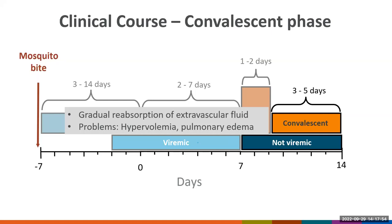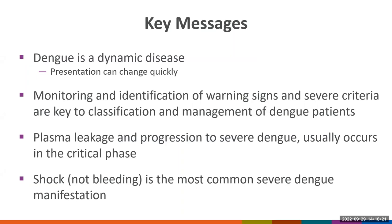The last phase of dengue is the convalescent phase, which lasts about 3 to 5 days. The extravascular fluid is reabsorbed in a gradual manner, and the clinical problems in this phase include hypervolemia and pulmonary edema, many times caused by excessive IV fluids administered during the previous phases. The critical phase usually lasts only 24 hours. It is very important to monitor and identify warning signs and severe criteria to classify patients appropriately. Plasma leakage and progression to severe disease usually happen in the critical phase. Shock — not bleeding — is the most common severe dengue manifestation.